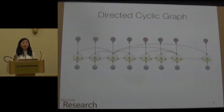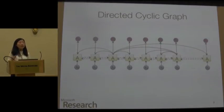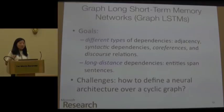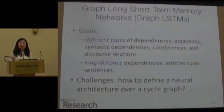Now we have a complex graph infrastructure, and one significant challenge is that this graph is actually a cyclic graph — here I show where the cycles come from. Even if we only consider adjacency and dependency relations, there will be cycles, and with discourse relations it will be even more complicated. So the goal of the Graph LSTM is to capture different types of dependencies — adjacent, syntactic, coreference, and discourse — in a unified network, capturing long-distance dependencies. The challenge is how to define a neural architecture over a cyclic graph so that learning is tractable.